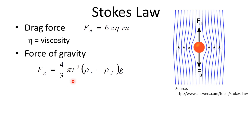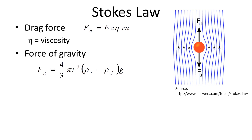The force of gravity we can calculate in a straightforward manner. Here we have an expression for the volume of a sphere, and we multiply that volume by the difference in density between the density of the particle — rho subscript s — and the density of the fluid — rho subscript f. This accounts for the weight of the particle itself as well as the buoyant force of the fluid on the particle. And g here is the acceleration due to gravity.